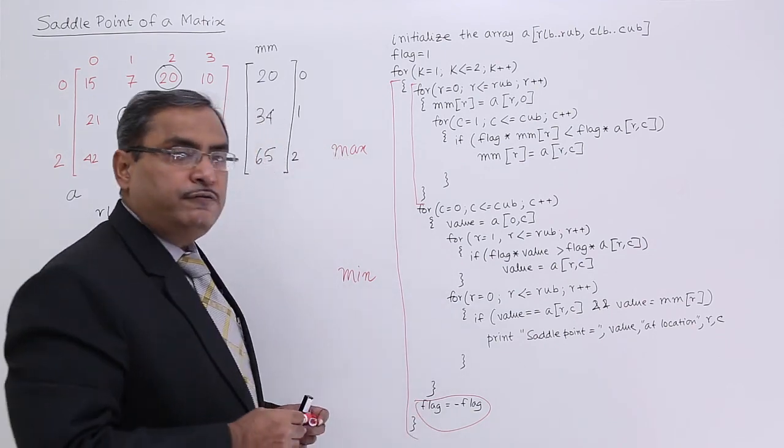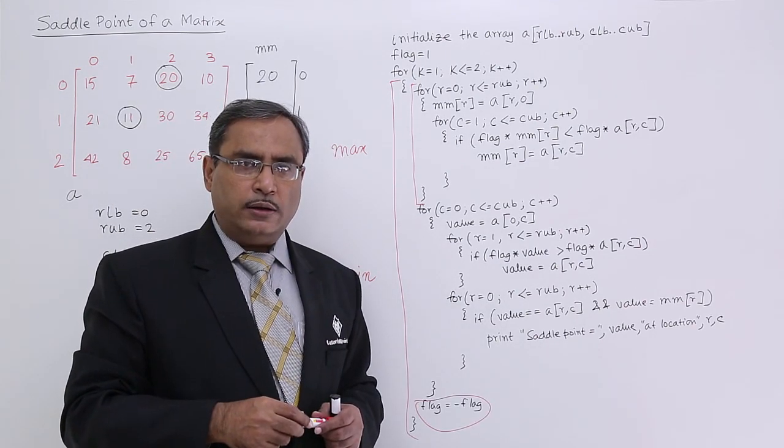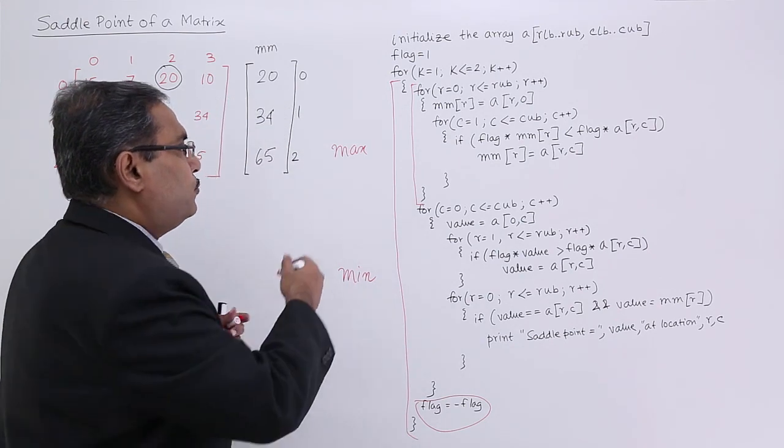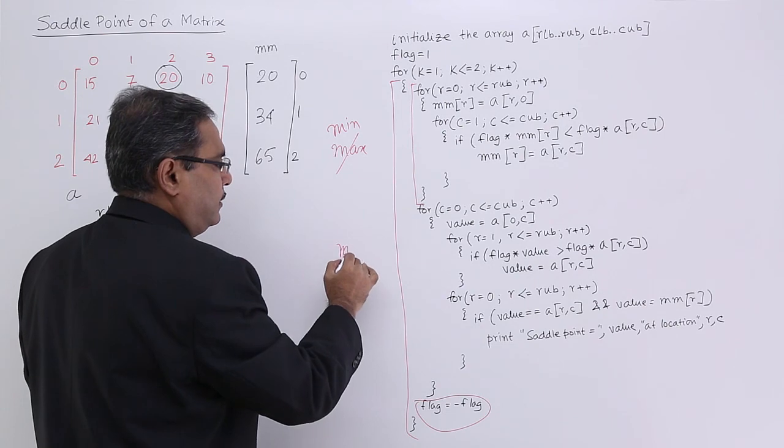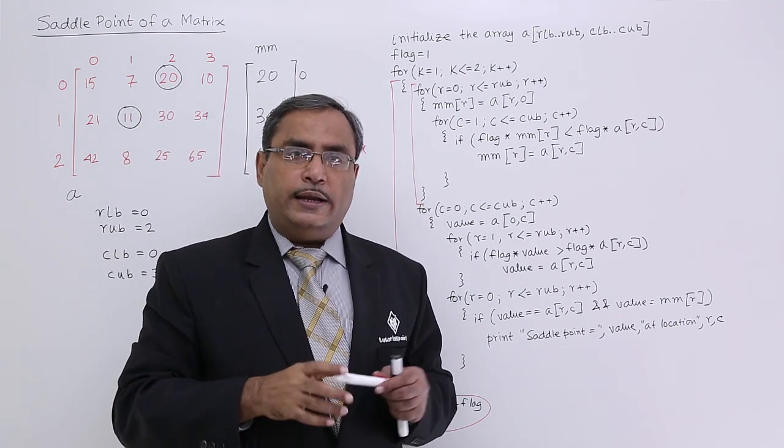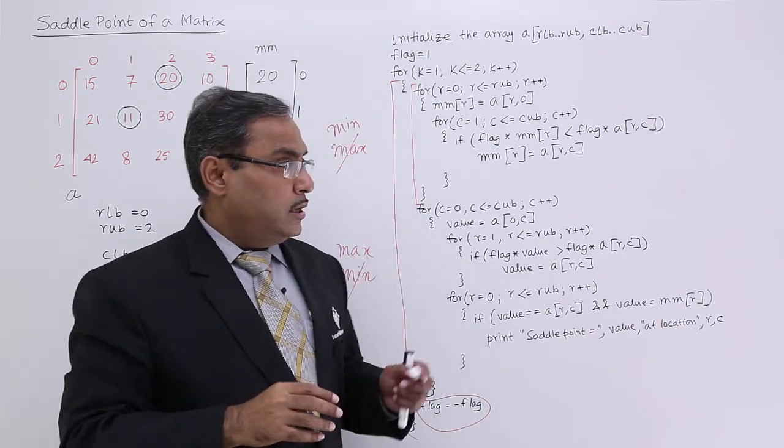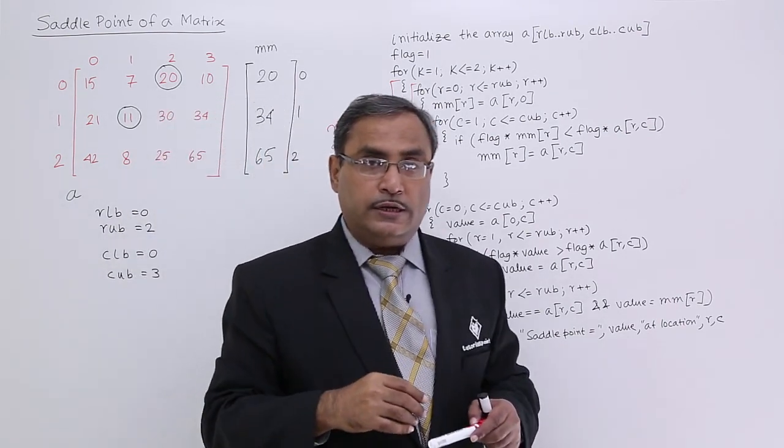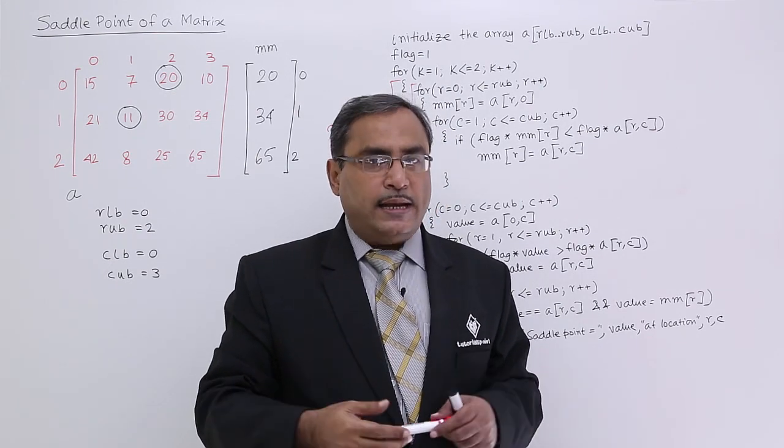Now flag is equal to flag minus 1. I could have written flag is equal to minus 1. Now the same loop will calculate min. I am going to get saddle point in min max and max min logics. I think you are getting my logic, how the same loop can calculate maximum in the first time looping and minimum in the second time looping.